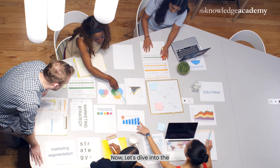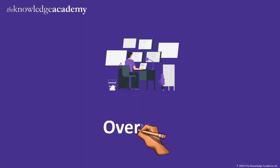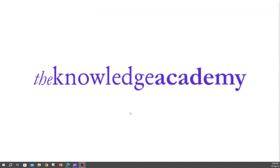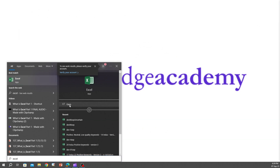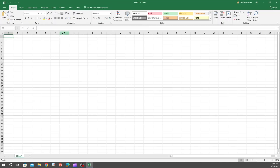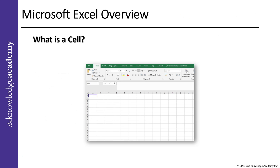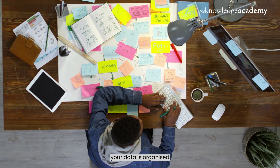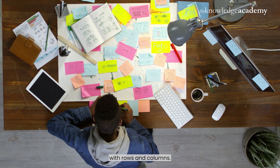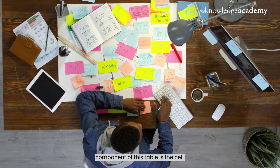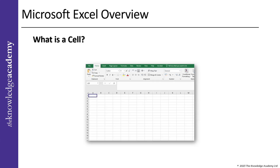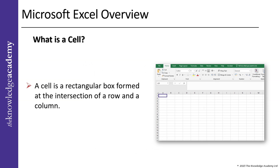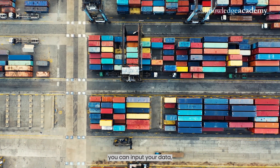Now let's dive into the Microsoft Excel basics overview. First, let's learn how to open Microsoft Excel on your computer. You can use the search box and type in MS Excel, then click on Open. What is a cell? In Excel, your data is organized in a table-like structure with rows and columns. The smallest but most valuable component of this table is the cell — a rectangular box formed at the intersection of a row and a column.